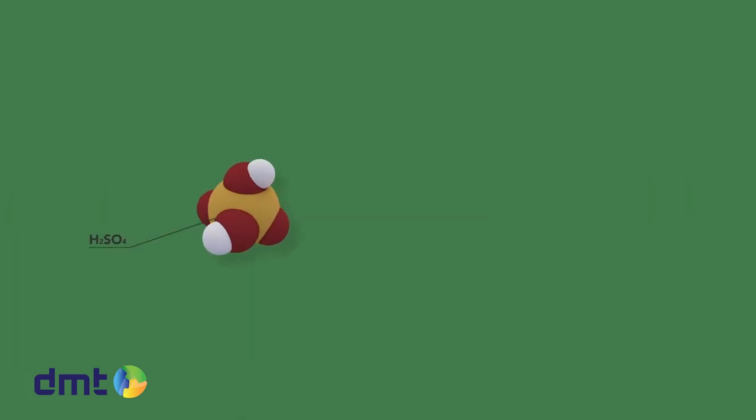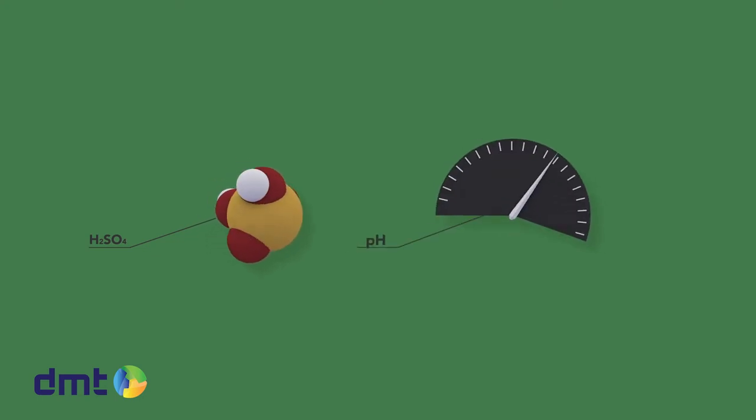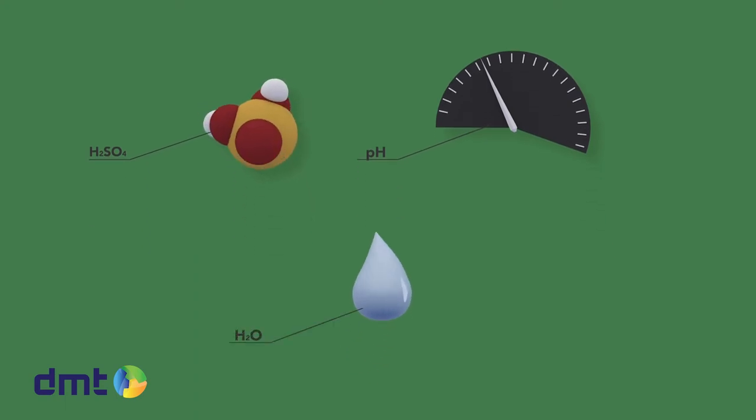One of the waste products is sulfuric acid. The sulfuric acid will cause a drop in the pH levels of the circulation water. Therefore, injection of fresh water is required, which is achieved by adding supply water.